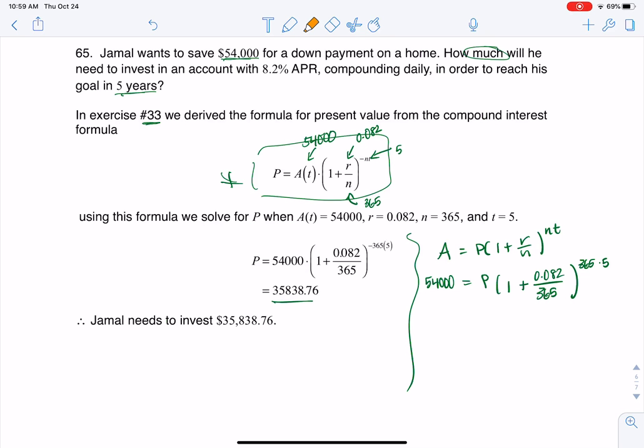So what I'm going to do is I'm going to find this number on my calculator and this one and just simplify this equation a little bit. So I'm going to have $54,000 is going to equal P times. Now, when I crunched the one plus 0.082 divided by 365, I get 1.000225.